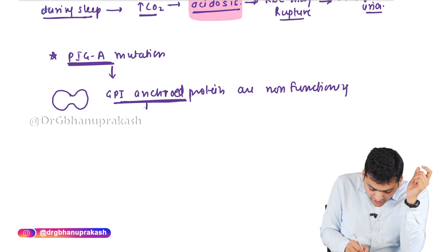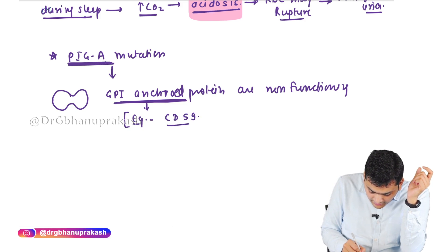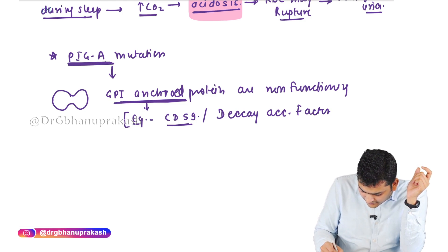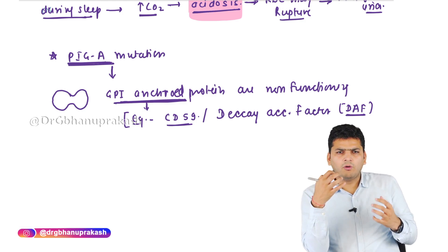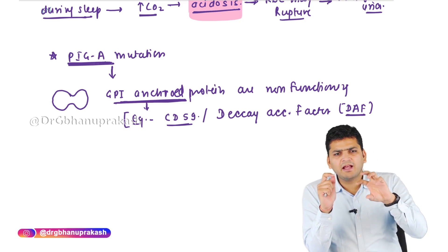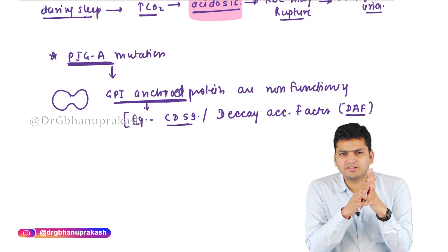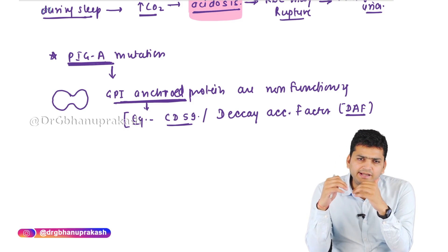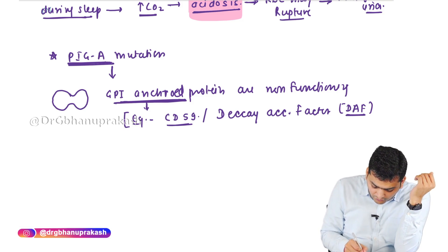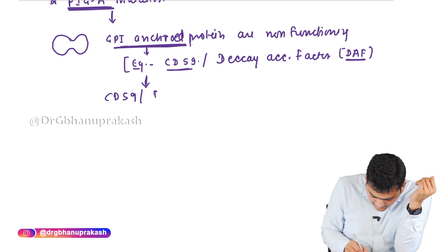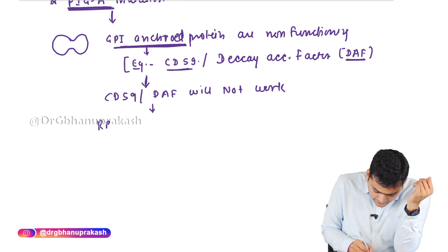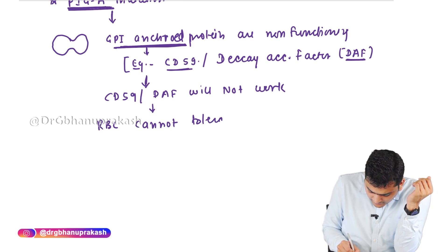The GPI-anchored proteins of particular concern are CD59 and the Decay Accelerating Factor (DAF). Normally in a healthy individual, DAF and CD59 work via these GPI-anchored proteins and prevent hemolysis during acidosis. But if someone has a PIGA gene mutation, the GPI-anchored proteins are not made properly, so CD59 and DAF will not work, and the RBC cannot tolerate even slight acidosis.